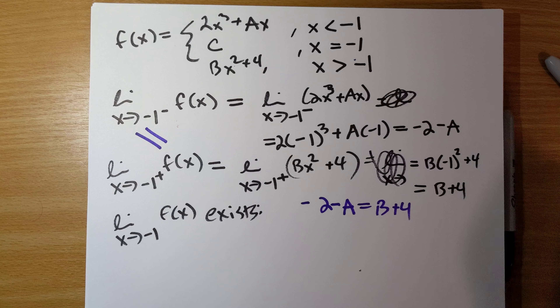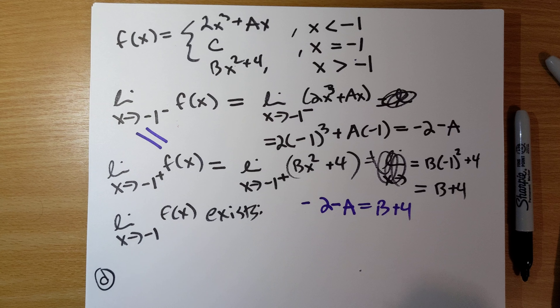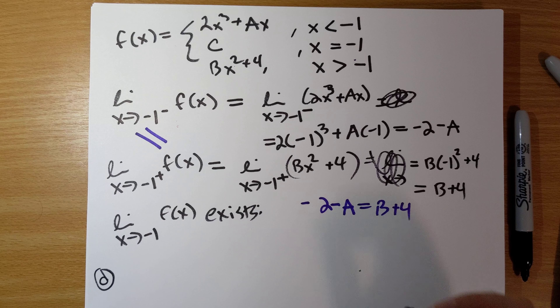Part d says: suppose c is equal to 10 and f is continuous for all x. Continuity means the limit as x goes to negative 1 of f of x must equal f of negative 1, and f of negative 1 is now 10. So we need 10 to equal negative 2 minus a, and also equal b plus 4. Solving these, a needs to equal negative 12 and b needs to equal 6.